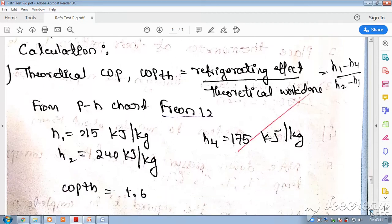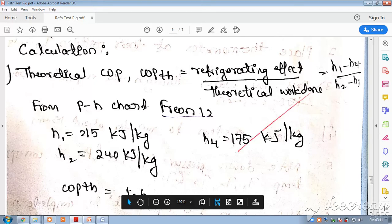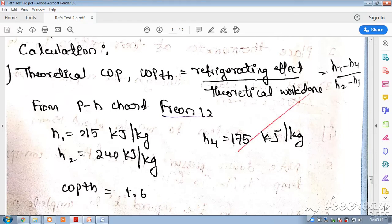Then the theoretical COP is the refrigeration effect: H1 minus H4 divided by H2 minus H1, where these are the enthalpies. So the refrigeration effect is H1 minus H4 and the compressor work is H2 minus H1.